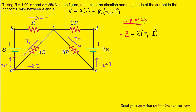We continue through the loop and pass through the resistor marked 4R. We use Ohm's Law to determine the potential difference: the resistance 4R multiplied by the current flowing through it, which has been marked I1. We are moving with that current, so that is another negative potential change. We write minus 4R multiplied by I1 to represent that potential change. We then reach point A and turn back to where we started, completing the loop. Whenever we complete that journey, we set all those potential changes equal to zero.